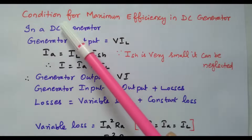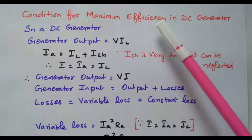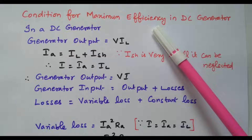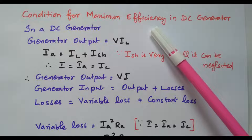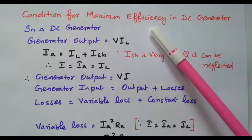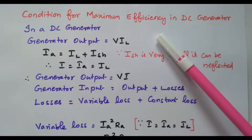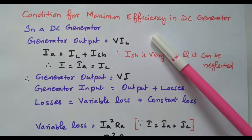We need to find the condition for maximum efficiency. Efficiency is nothing but power output divided by power input. First we will find what is the generator output, what is the generator input. Then we will find the efficiency, and then we will go for the condition for maximum efficiency.